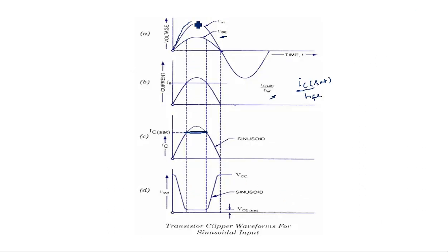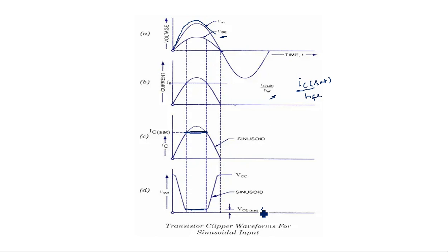In this way, the clipping action cuts the signal to a flat surface instead of a curved shape due to clipping. The transistor clipper clips the input signal at VCE_sat (in voltage) or IC_sat (in current). In the next video I will explain the emitter-coupled clipper, which is one of the most commonly used transistor clipper configurations. Thank you.